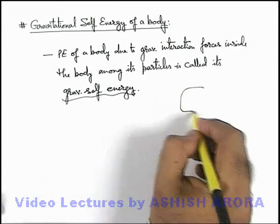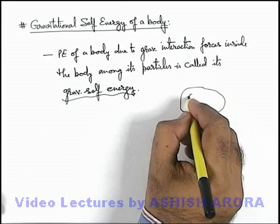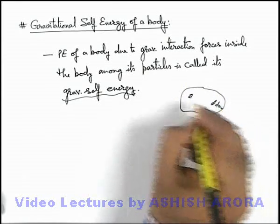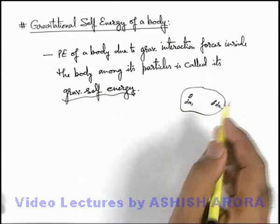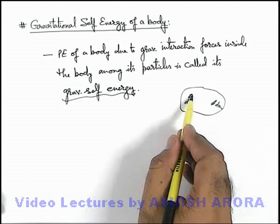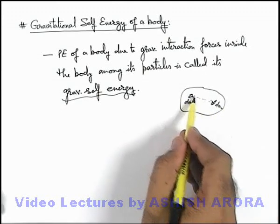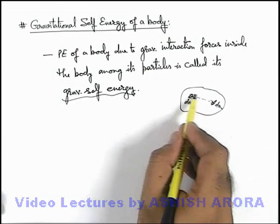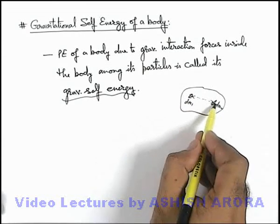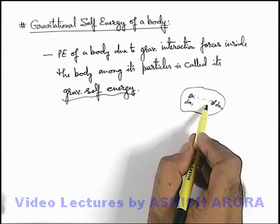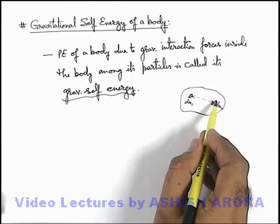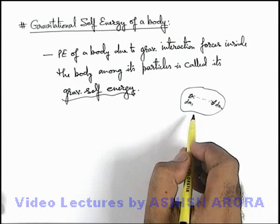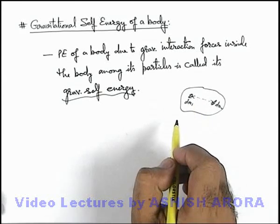For example, if there is a body, we can say inside the body, if we consider two elemental masses dm₁ and dm₂, there exists some gravitational energy between these two particles of the same body. So the integration of this interaction energy of two elemental particles of the body over the whole volume of the body is termed as gravitational self energy of the body, or gravitational internal energy of the body.